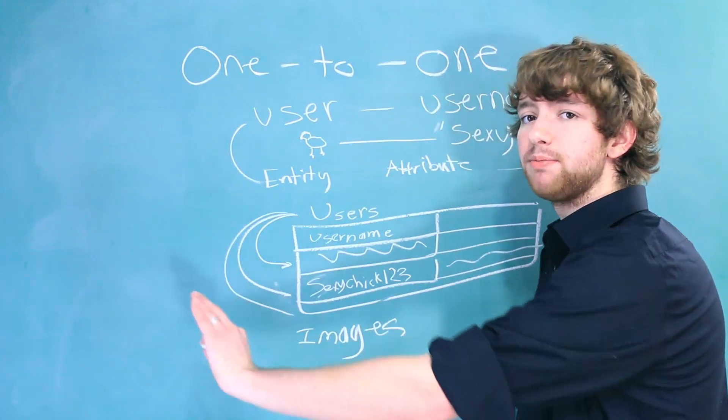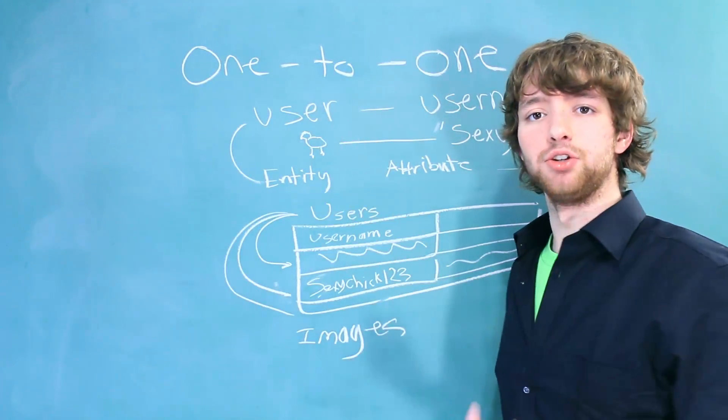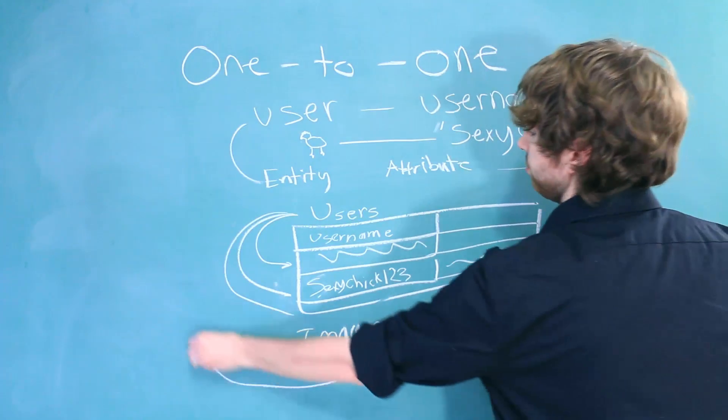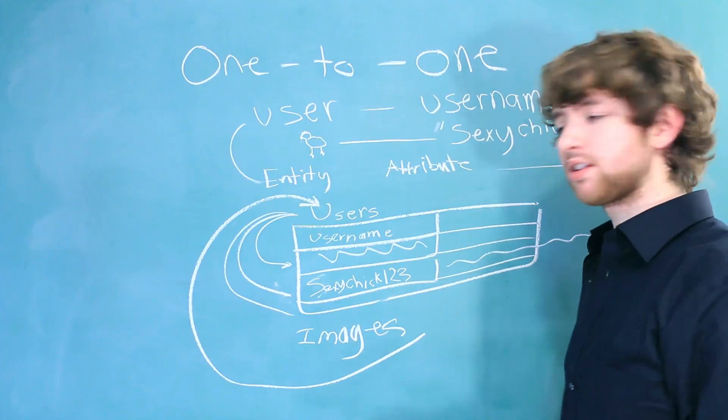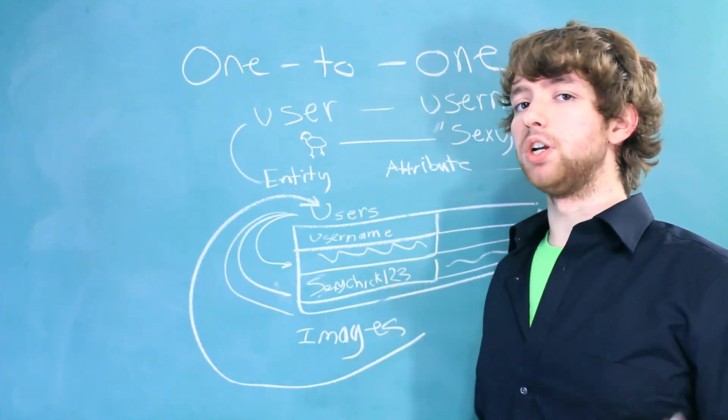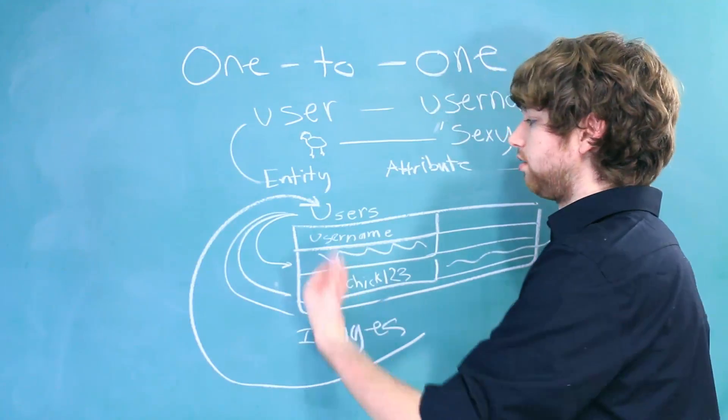And what this will do, it will separate the images from the user just a little bit, and then this images table is going to have a foreign key that points back to the user. What's the benefit in this?